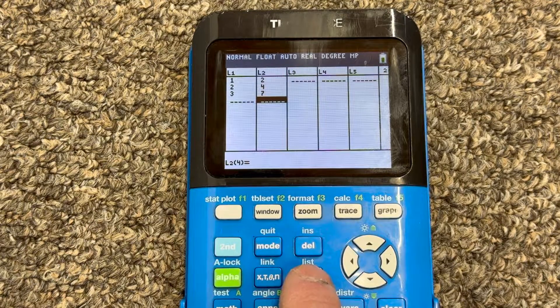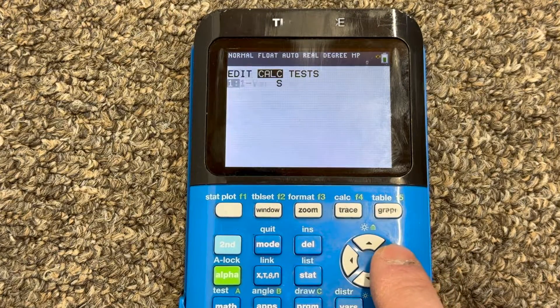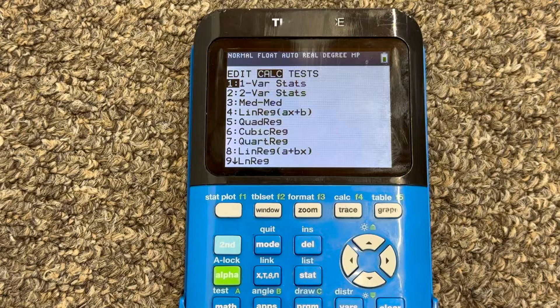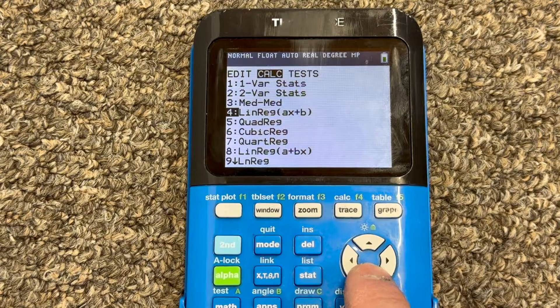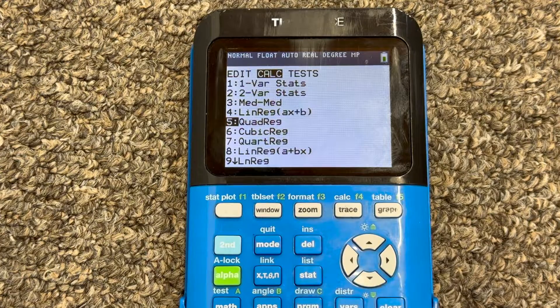Then what we're going to do is go back to stat, and we're going to arrow over to where it says calculate. Now depending on the type of regression you want to do, you could do like a linear regression and find the line of best fit, or you could do quadratic regression.